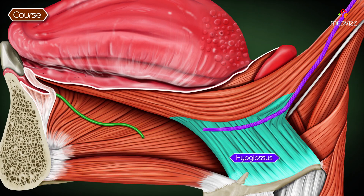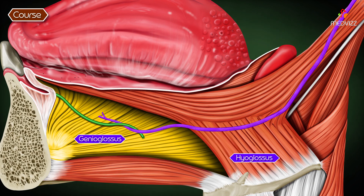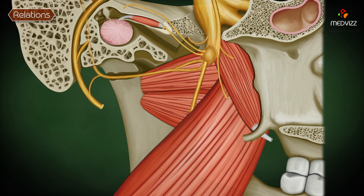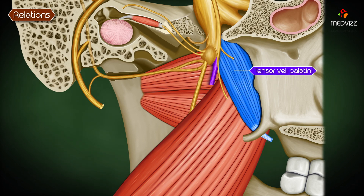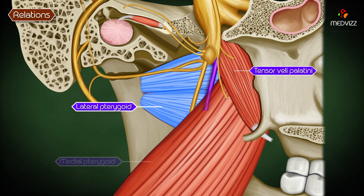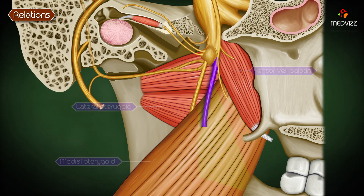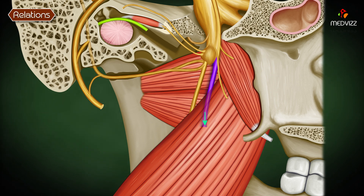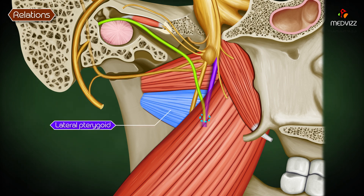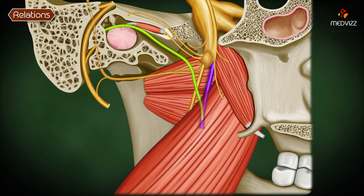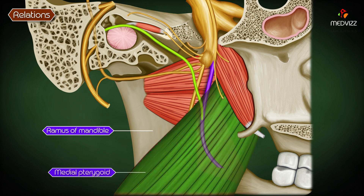The lingual nerve lies on the surface of the hyoglossus and genioglossus to reach the tongue. In its relations, it runs first between the tensor veli palatini and the lateral pterygoid, then between the lateral and medial pterygoids. About two centimeters below the skull, it is joined by the chorda tympani nerve emerging at the lower border of the lateral pterygoid.